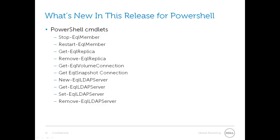There are 10 new PowerShell commandlets in this Host Integration Toolkit. StopEQLMember shuts down a specified PS Series array. RestartEQLMember shuts down and restarts a specified PS Series array. GetEQLReplica retrieves a list of replicas in a replica set for a specified volume. RemoveEQLReplica deletes a replica from a replica set. GetEQLVolumeConnection retrieves configuration and statistics for iSCSI connections to a volume. GetEQLSnapshotConnection retrieves configuration and statistics for iSCSI connections to a snapshot.